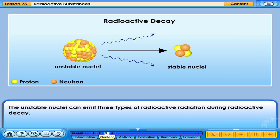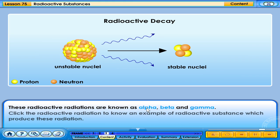The unstable nuclei can emit three types of radioactive radiation during radioactive decay. These radioactive radiations are known as alpha, beta, and gamma. Click the radioactive radiation to know an example of radioactive substance which produced this radiation.